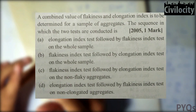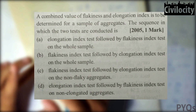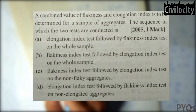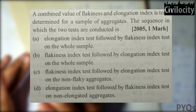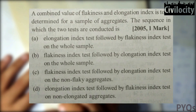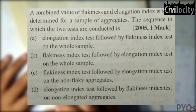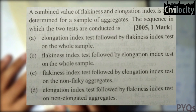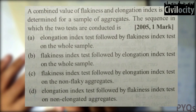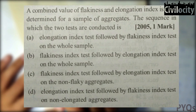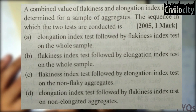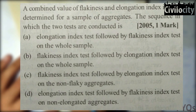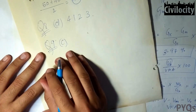Question nine: a combined flakiness and elongation index is to be determined — in what sequence are the tests conducted? The elongation test is done first, and then the flakiness index test is done on the non-flaky aggregates. So the correct option is C: flakiness index followed by elongation index test on non-flaky aggregates.